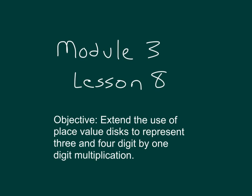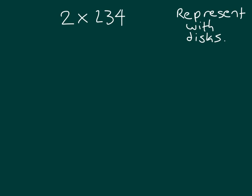The objective is to extend the use of place value disks to represent 3 and 4 digit by 1 digit multiplication. Let's take a look at this problem, 2 times 234, and let's represent this with disks. We'll also write a matching equation recording the partial products.